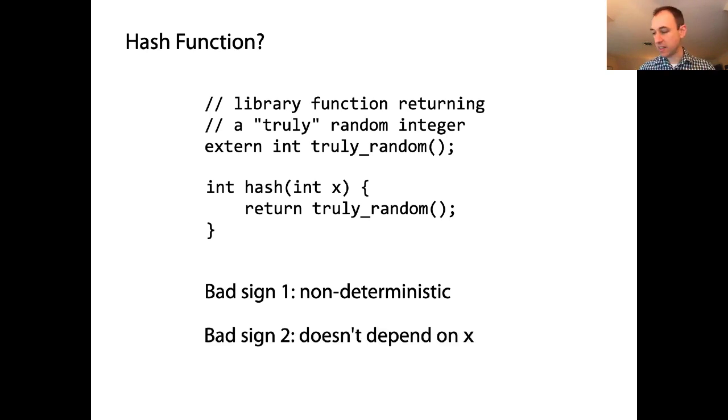And then the other bad sign is that, which is related to the first one, is that the output doesn't depend on x. The items coming in and the bucket that we assign that item to in no way depends on the value of x. These two are related. Because part of the way we're going to solve the problem of it being non-deterministic is we're going to make it highly dependent on the value of x. So this was not such a great idea. This is not what we mean when we say that the hash function is random. We don't mean that it generates a new random number and that that identifies the bucket where we're going to put the item.